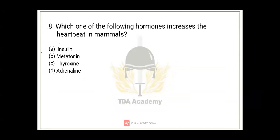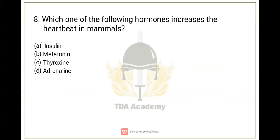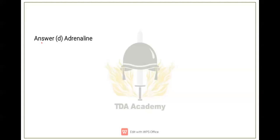Let's move on. Question number 8: which hormone increases the heartbeat in mammals? Option A: insulin. B: melatonin. C: thyroxine. Option D: adrenaline. There's a spelling mistake here. The correct option is option D.